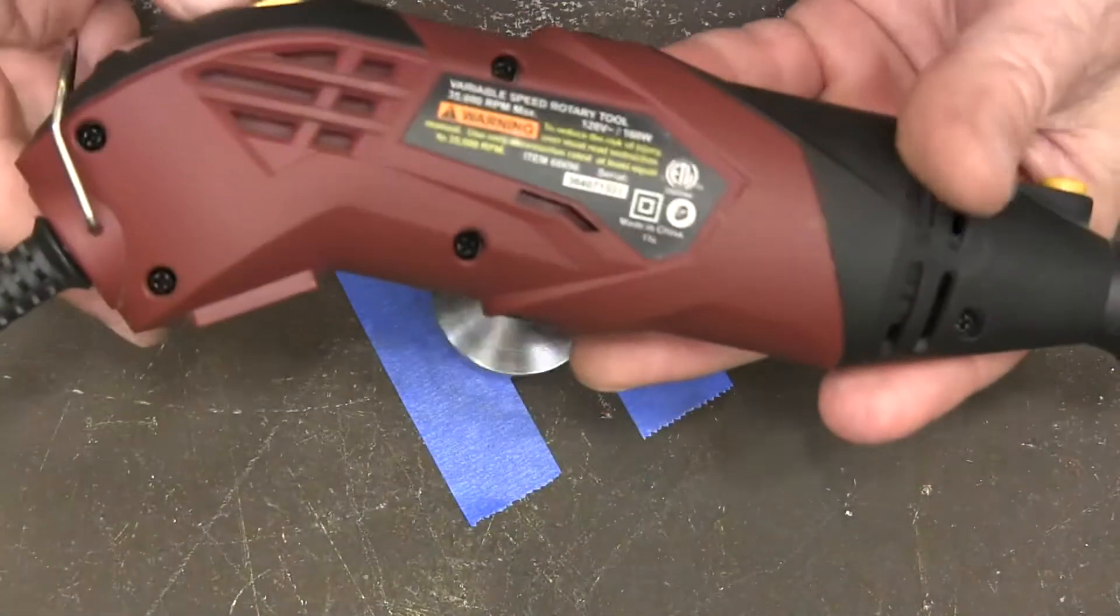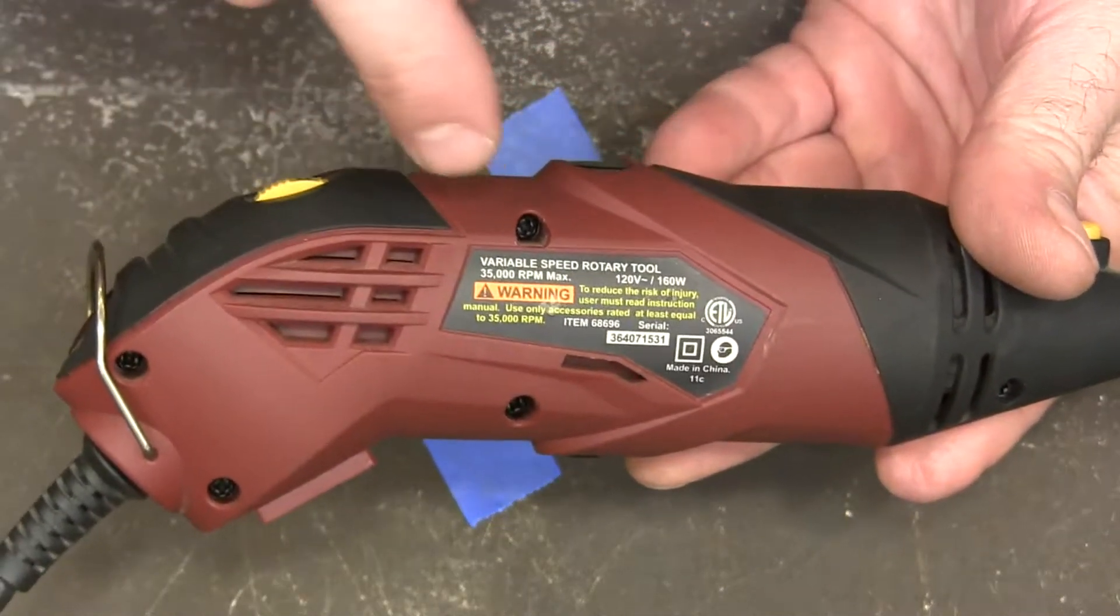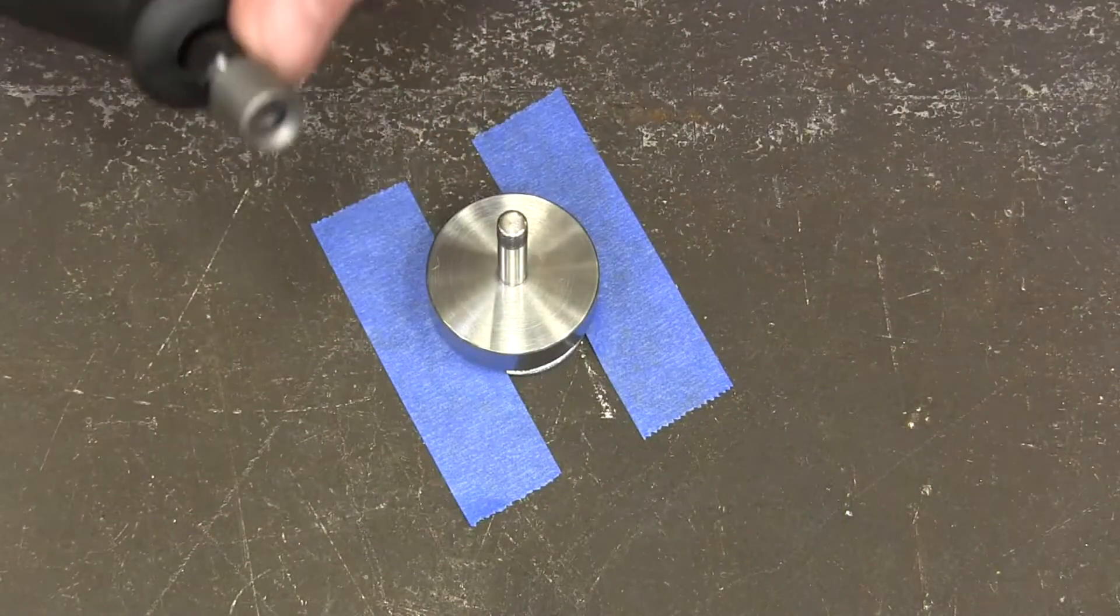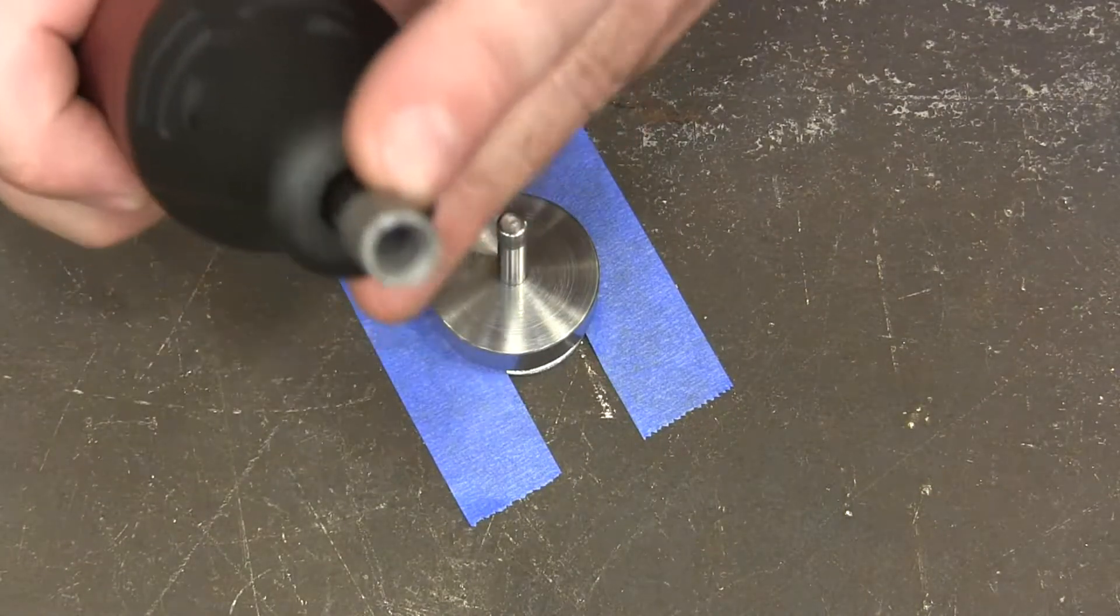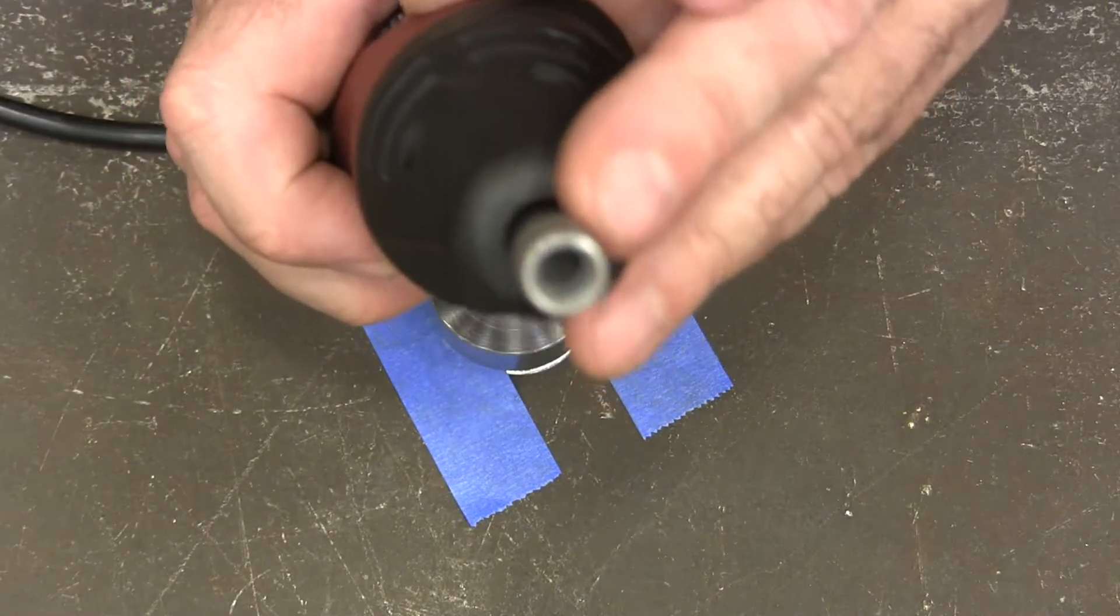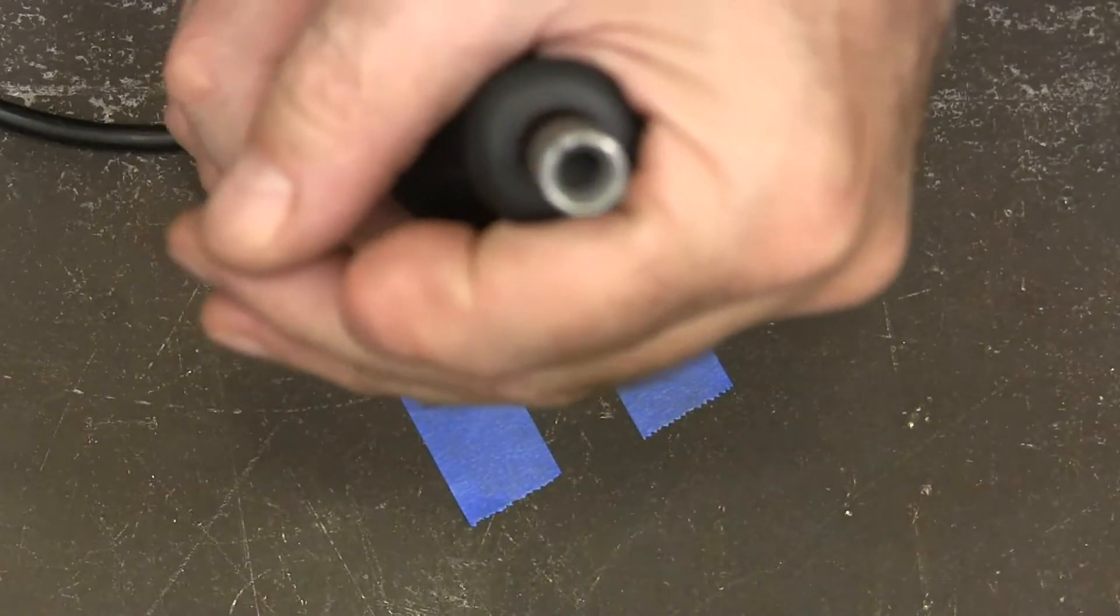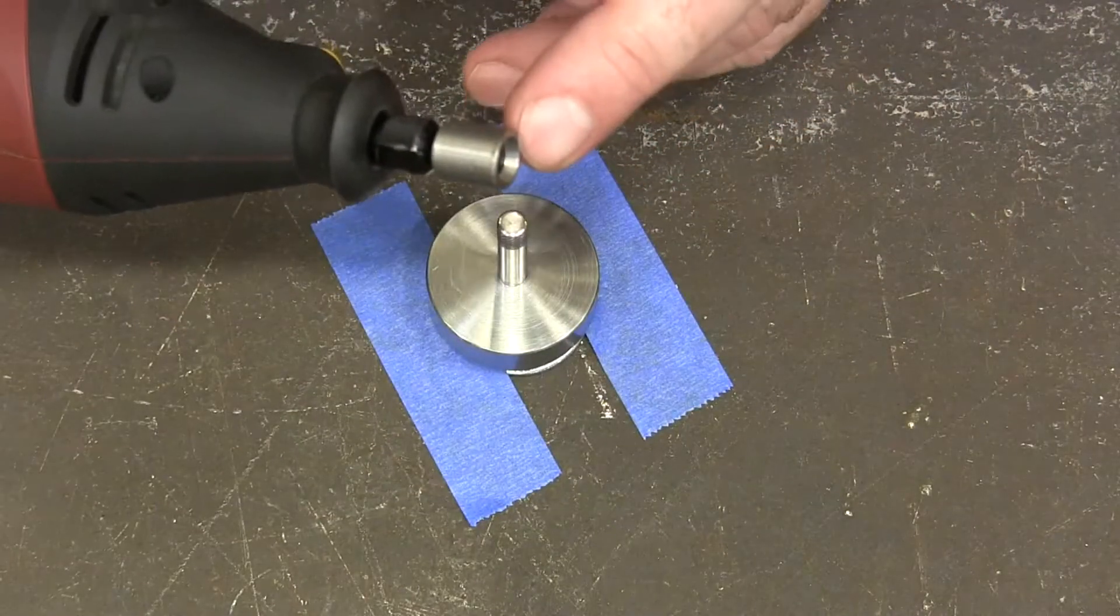It's a Harbor Freight Dremel, and this thing does 35,000 RPMs. I made a little cup to go inside of it that—let's see if it'll focus on that—just drilled a hole in there, put a little rubber washer in there.